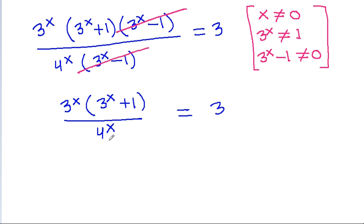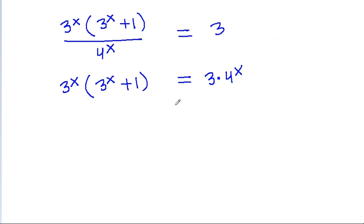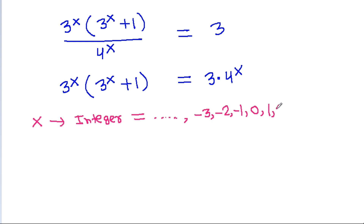If we cross multiply, then 3^x times (3^x + 1) is equal to 3 times 4^x. Since x is an integer, it can be equal to -3, -2, -1, 0, 1, 2, 3, and so on. We know x is not equal to 0, so either x can be negative or x can be positive.